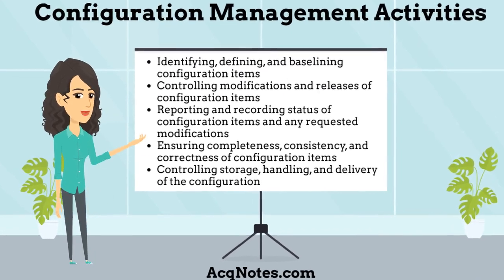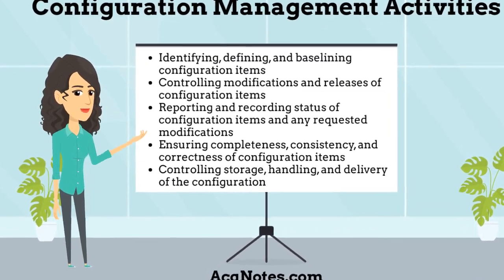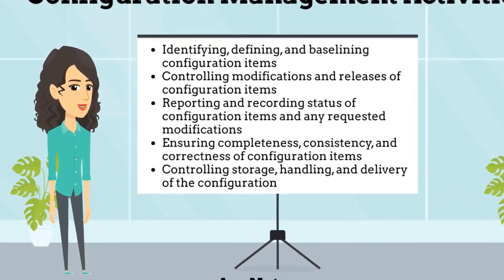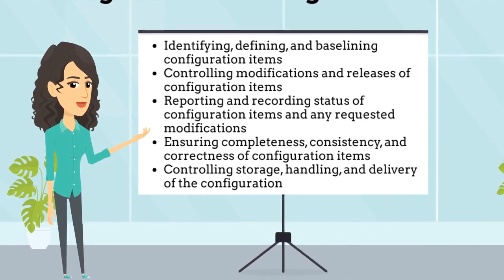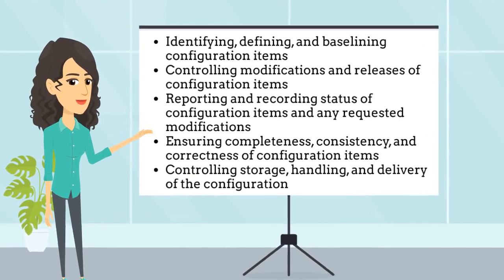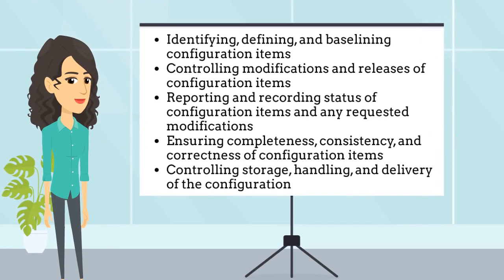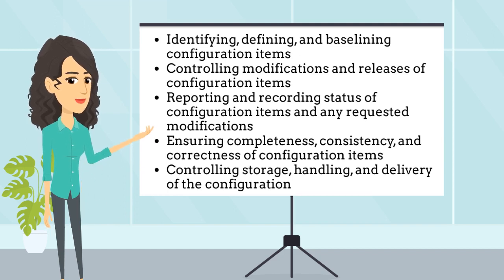What are the main configuration management activities? The main CM activities include identifying, defining, and baselining configuration items, controlling modifications and releases of configuration items, and reporting and recording status of configuration items and any requested modifications.